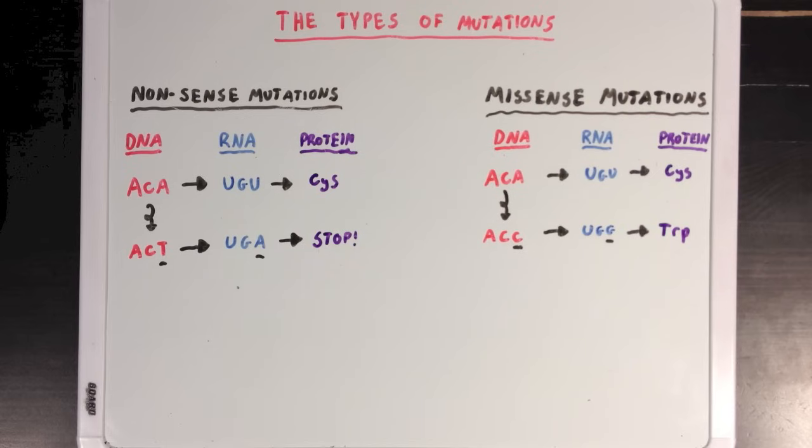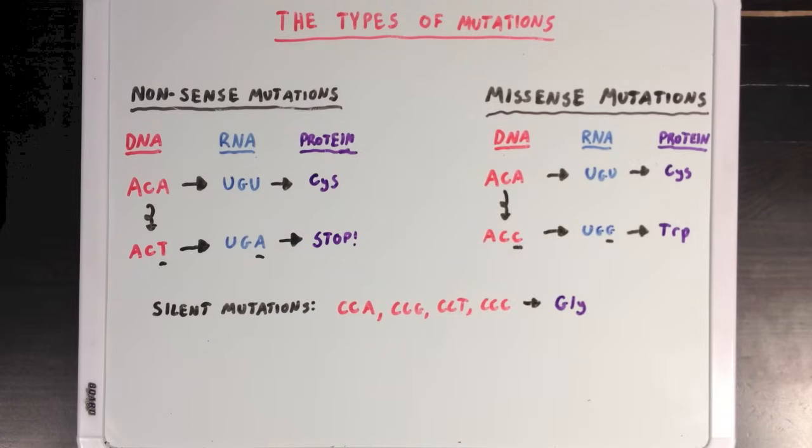So now we can divide the missense mutations even further into a bunch of smaller categories. Silent mutations are when the mutation doesn't actually affect the protein at all. Since many different RNA codons can code for the same amino acid, it's possible that the mutation might not affect the protein at all. So in this example, CCA, CCG, CCT, and CCC in a section of DNA will all end up coding for glycine. So if you change the third base, it wouldn't affect the final protein.